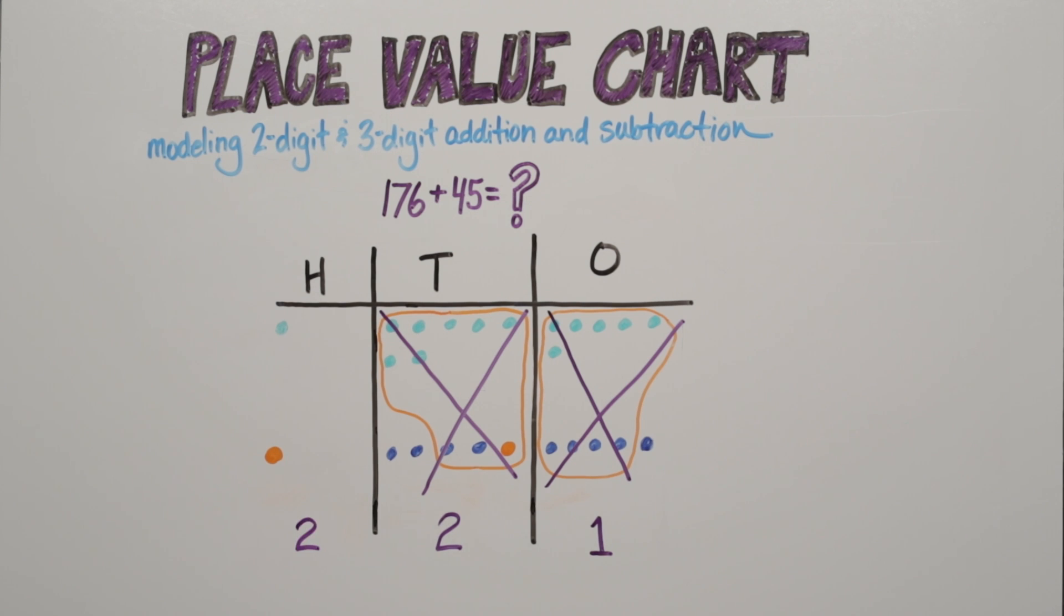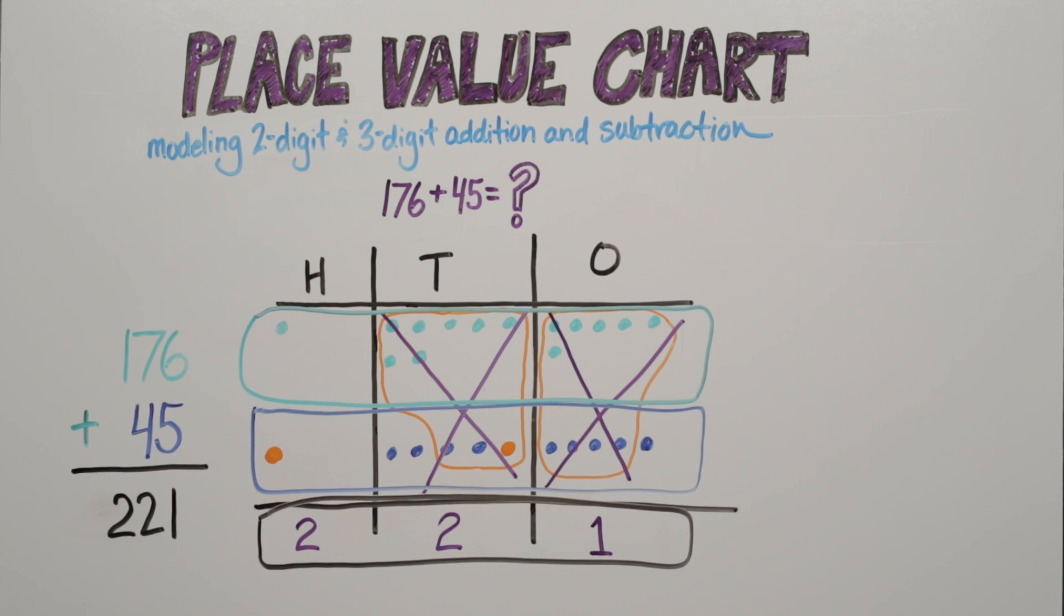Look, we just showed why 176 plus 45 equals 221.